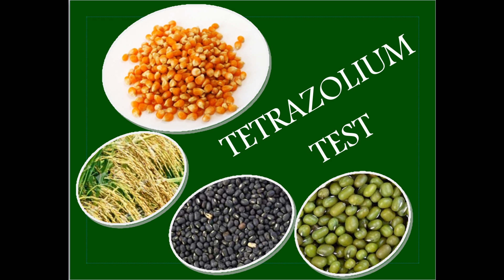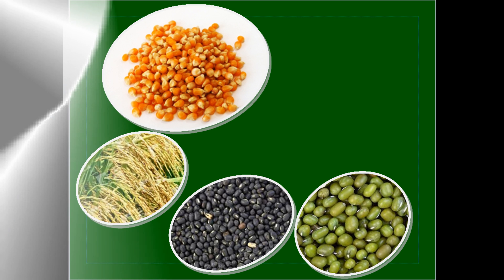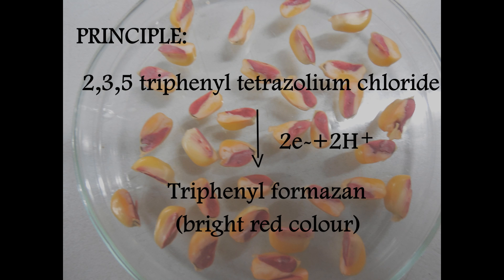Tetrazoleum Test. Principle: By means of a hydrogenation process, Triphenyl tetrazolium chloride is reduced into a stable, non-diffusable substance called Triphenyl formazone, which gives a color.